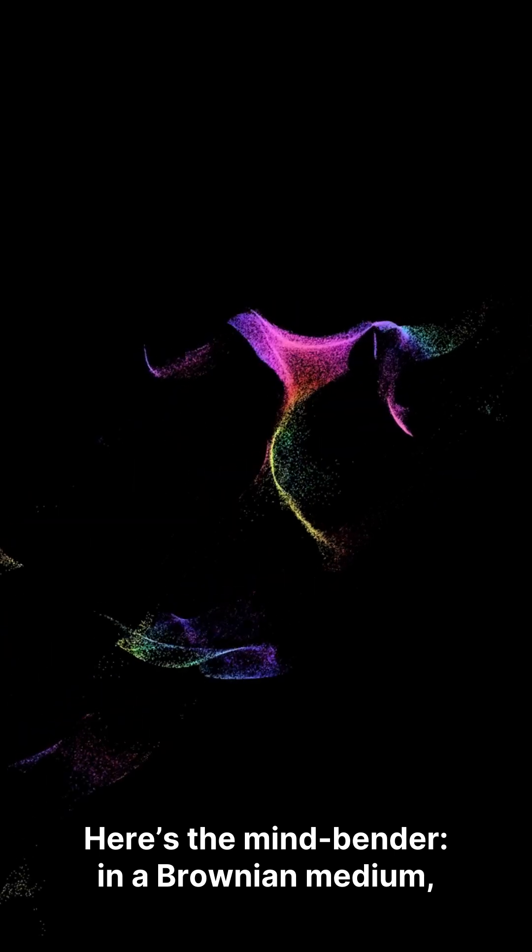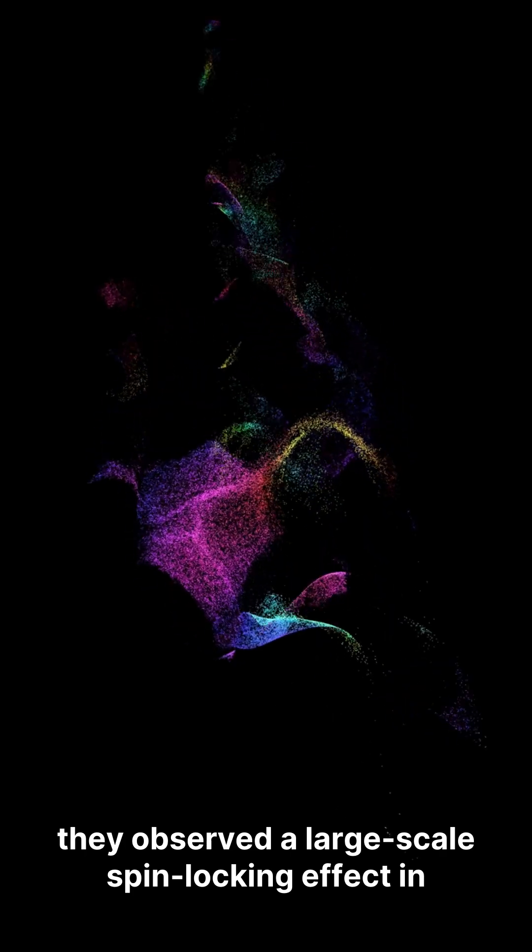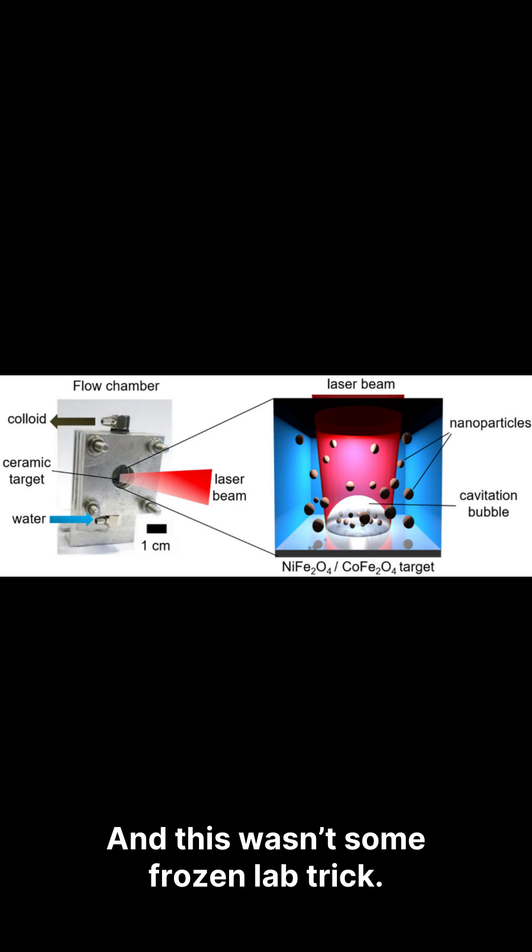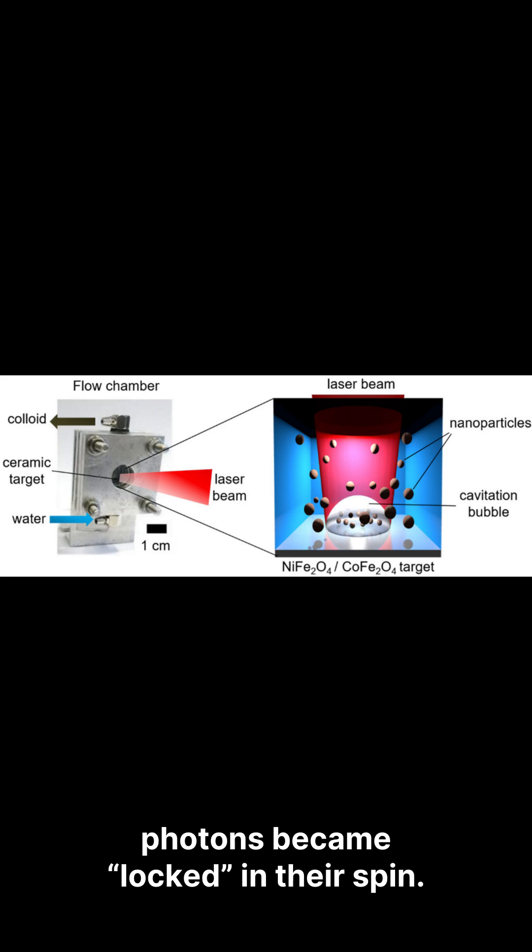Here's the mind bender. In a Brownian medium, they observed a large-scale spin locking effect in the sideways scattered photons. And this wasn't some frozen lab trick. The Technion write-up says they shined laser light on nanometric particles suspended in a liquid at room temperature, and the sideways scattered photons became locked in their spin.